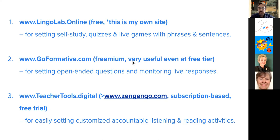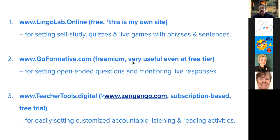The third site is TeacherTools Digital, which has just recently been renamed ZenGingle. It has so many different functions, but the main thing I've used it for has been to set short texts. There was recently an article shared to OTJ about how rarely students read texts that you set them for homework, and doing it this way keeps it accountable. That's the overview — let's get on to the actual sites.